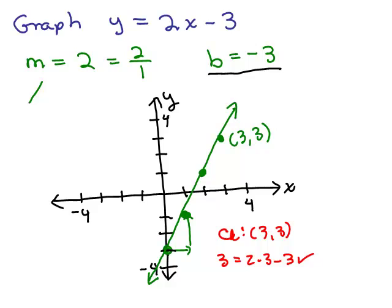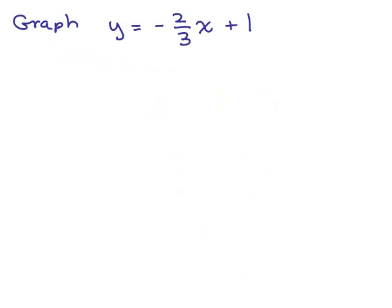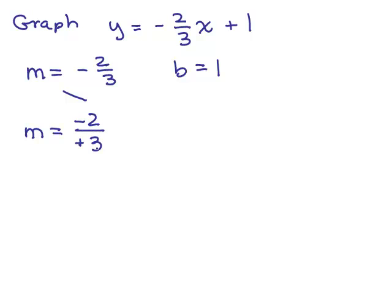Let's do another problem: y equals negative 2 thirds x plus 1. First, identify the slope and the y-intercept. The slope is the coefficient of x, which is negative 2 thirds. The y-intercept b is 1, so it crosses the y-axis at (0, 1). Since the slope is negative, it's going to slant downward. We want to write the slope as a fraction and decide where to put the negative sign — either as negative 2 over positive 3, or positive 2 over negative 3.